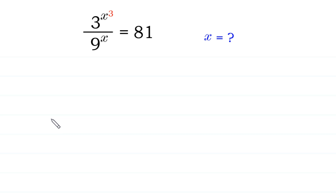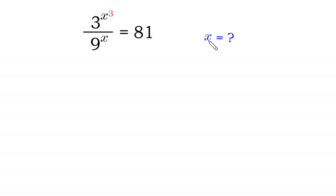Hello, welcome to how to solve this very nice exponential equation. 3 to the power x cubed over 9 to the power x is equal to 81, and we need to find all possible values of x.